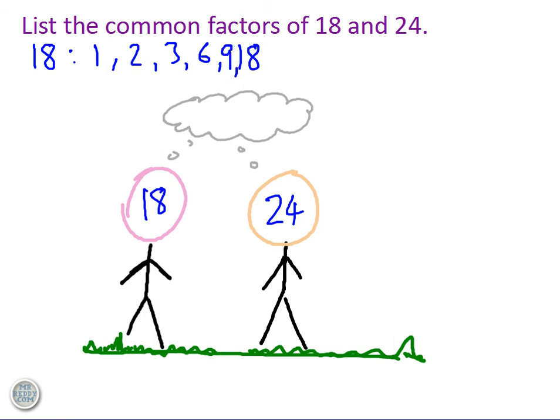And what about the factors of 24? The factors of 24 are 1, 2, 3, 4, 6, 8, 12 and 24.